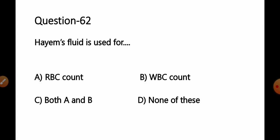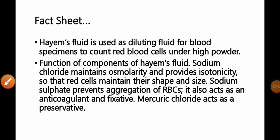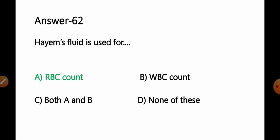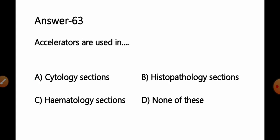Question number 62: Hayem's fluid is used for — option A: RBC count, B: WBC count, C: both A and B, D: none of these. Hayem's fluid is used as a diluting fluid for blood specimens to count red blood cells under high-power objective. Sodium chloride maintains osmolarity; sodium sulfate prevents aggregation of RBCs and acts as an anticoagulant; mercuric chloride acts as a preservative. So option A, RBC count, is correct.